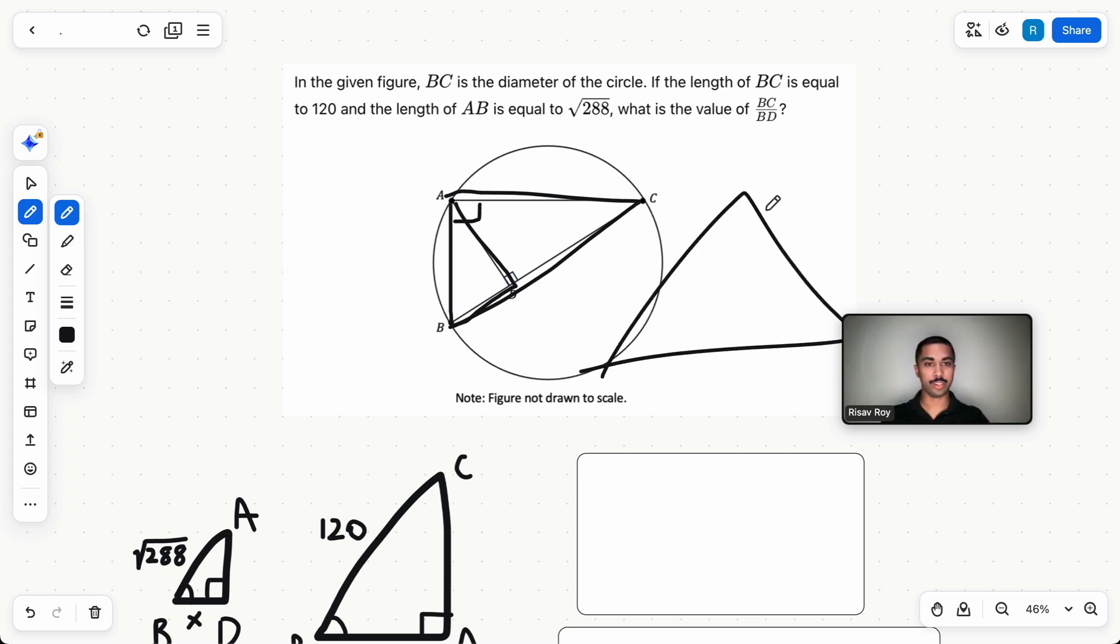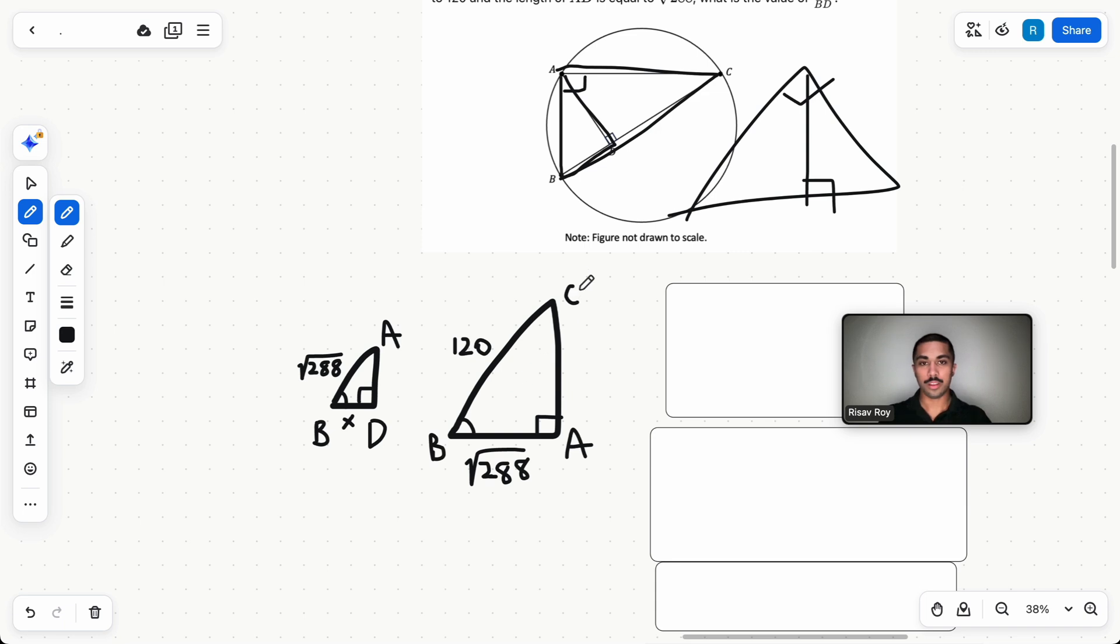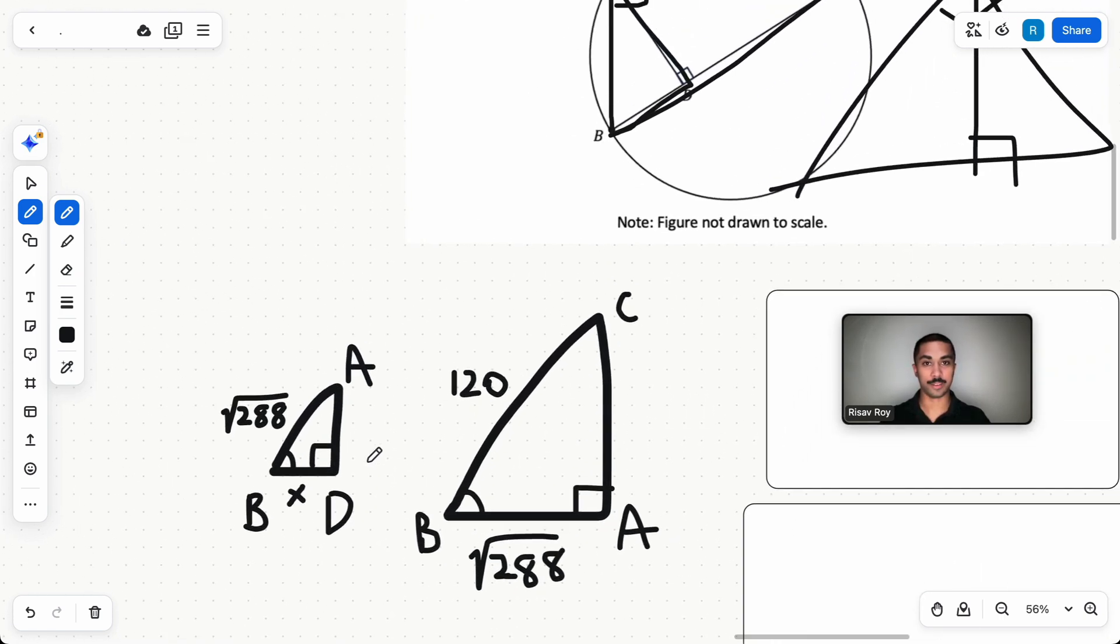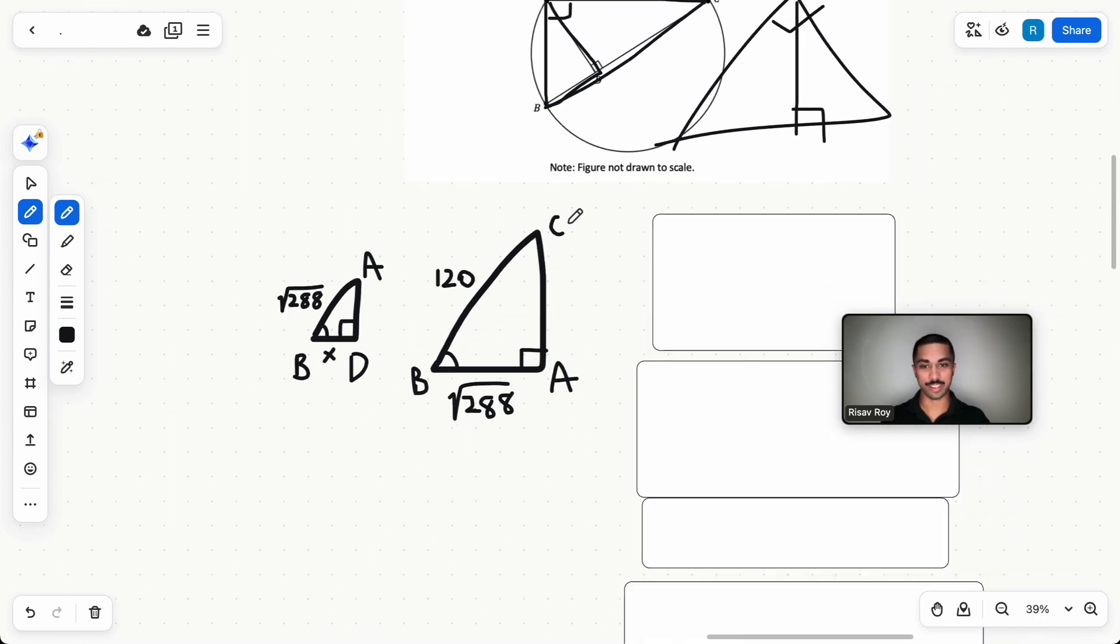So whenever you see a bunch of triangles on the SAT, like usually the SAT will have questions that look like this. They'll give you something like this. Just know that it's probably like 80, 90% of the time testing you on similarity whenever you have a bunch of triangles. So what I do for these triangles, for these similarity questions is just put it here. Just draw it out separately.